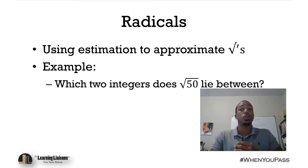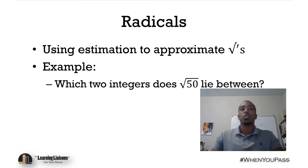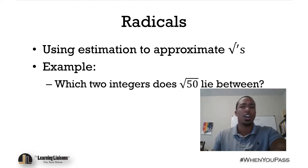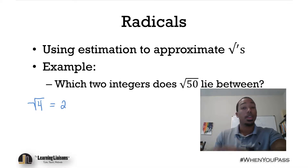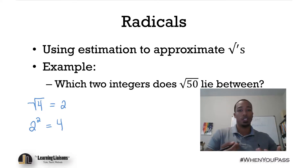Which two integers does the square root of 50 lie between? Before we tackle that, let me give a quick overview of square roots. A square root means: what number multiplied by itself gives us the number under the square root? For example, the square root of 4 is 2, because 2 squared — 2 times itself — equals 4.